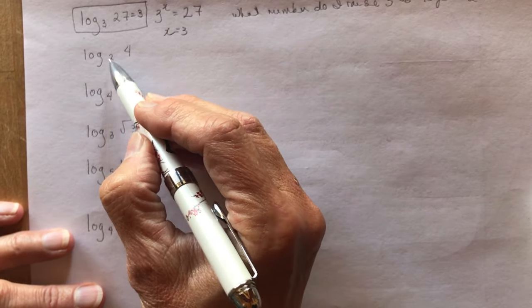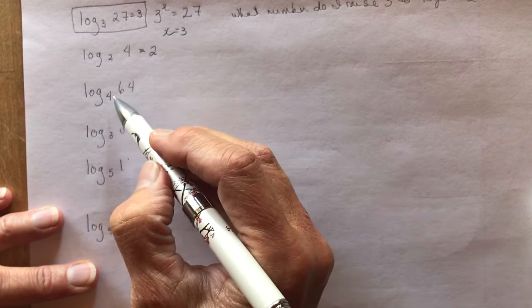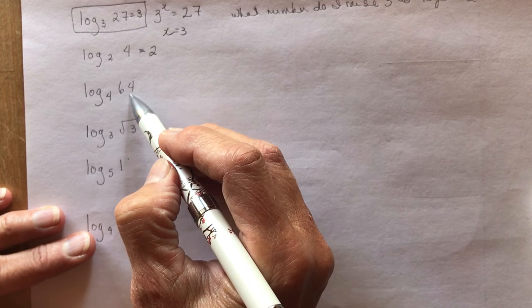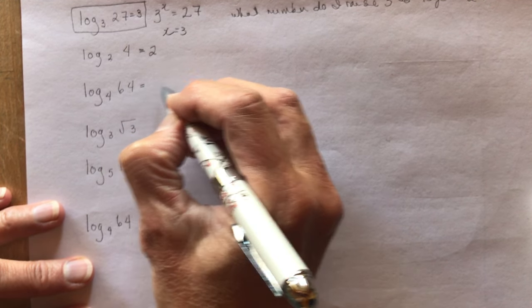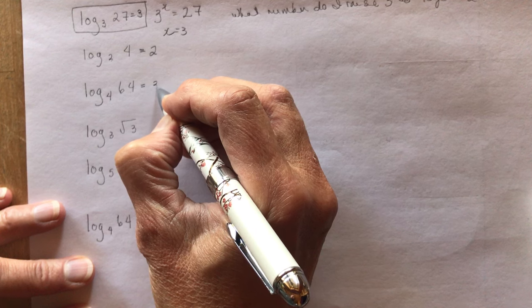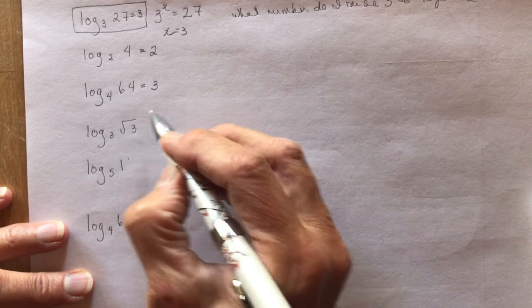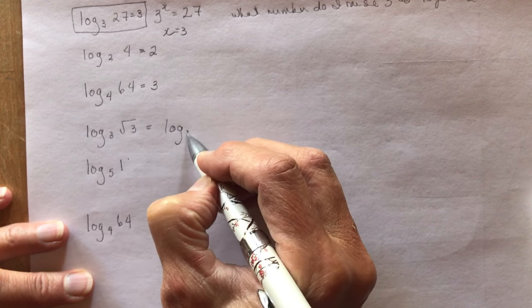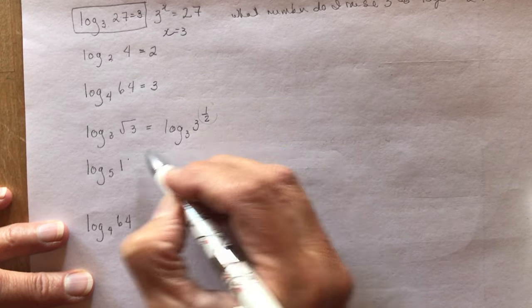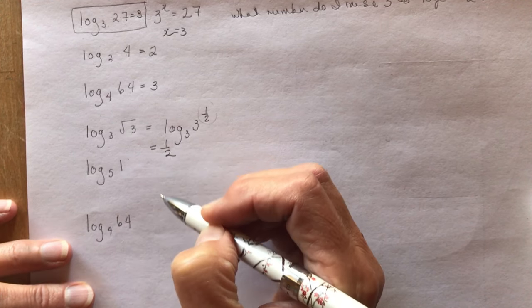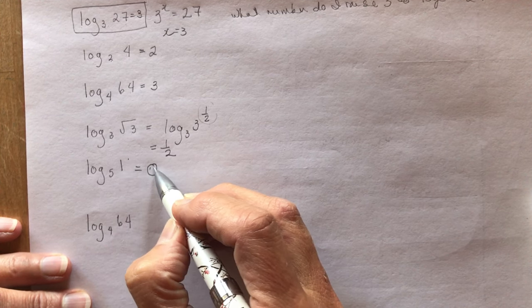This question says what do I raise 2 to to get 4? Well that's really easy, 2. 2 squared is 4. What do I raise 4 to to get 64? 4, 16, 64, that's 3. What do I raise 3 to to get the root of 3? That might be easier if you wrote it as log base 3 of 3 to the 1/2, and there's your answer right here. What do I raise 3 to to get 3 to the 1/2? Your answer is 1/2. What do I raise 5 to to get 1? Well, anything to the power of 0 is 1.